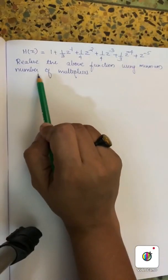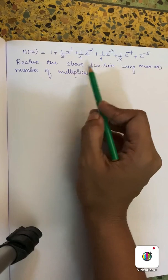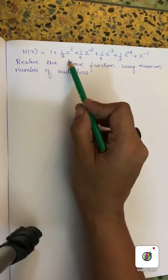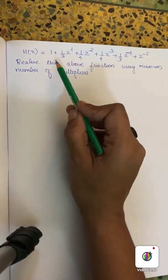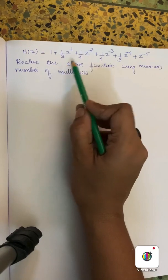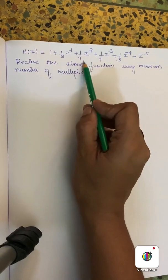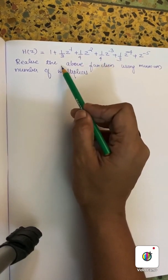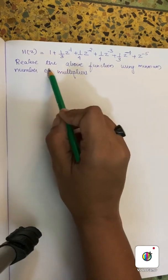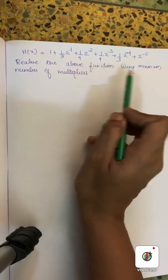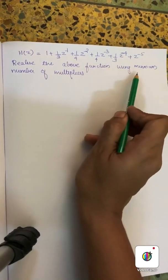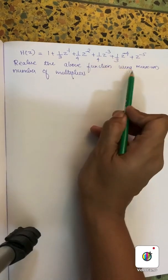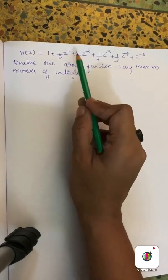Now let's see the next question. The question asks: realize the above function using the minimum number of multipliers.